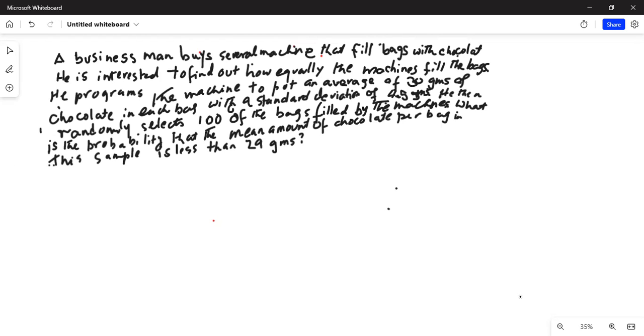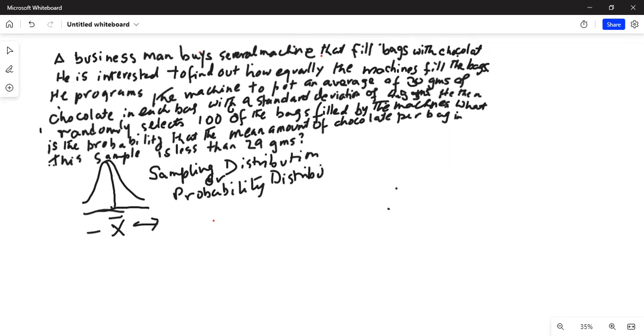Okay, so we are talking about the sampling distribution or the probability distribution of x bar. So let me draw a bell-shaped diagram. This is the sampling distribution of the sample means. That means we have x bar on the horizontal axis. On the vertical axis, we have probability. So this is the sampling distribution or probability distribution of x bar on the horizontal axis.